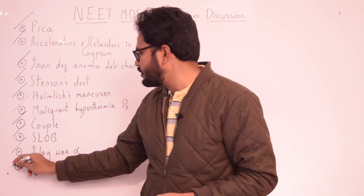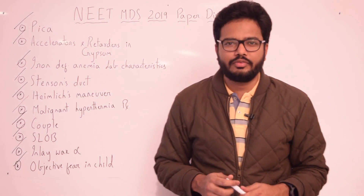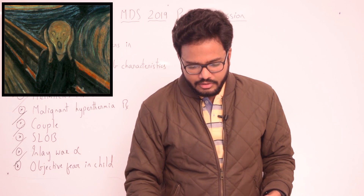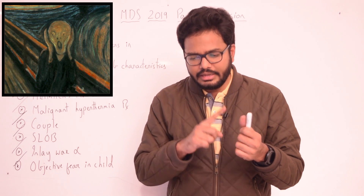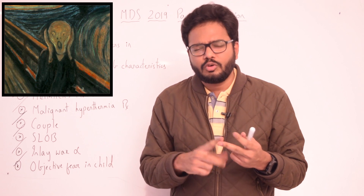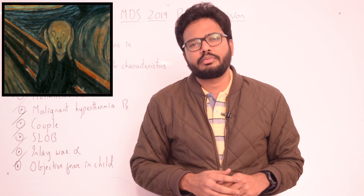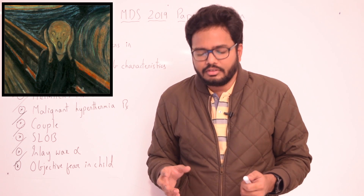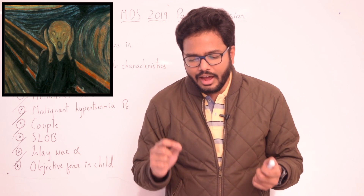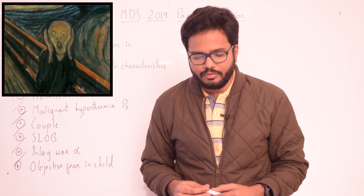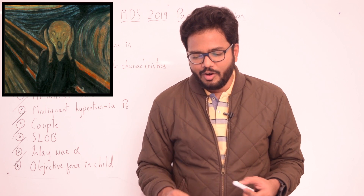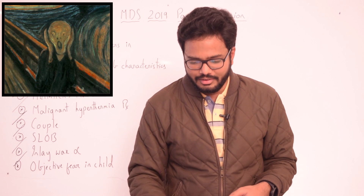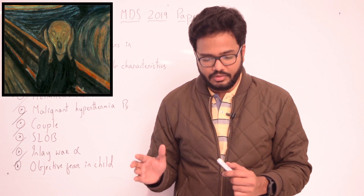Moving on to the final topic: objective fear in children. Fear can be of different types — innate, subjective, and objective. A child has objective fear because of their own past experiences. Fear is a reaction to a known danger; its source is consciousness. It may be defined as an unpleasant emotion consisting of psychophysiological changes in response to a realistic threat or danger. Innate fear occurs without prior stimuli or previous experience.